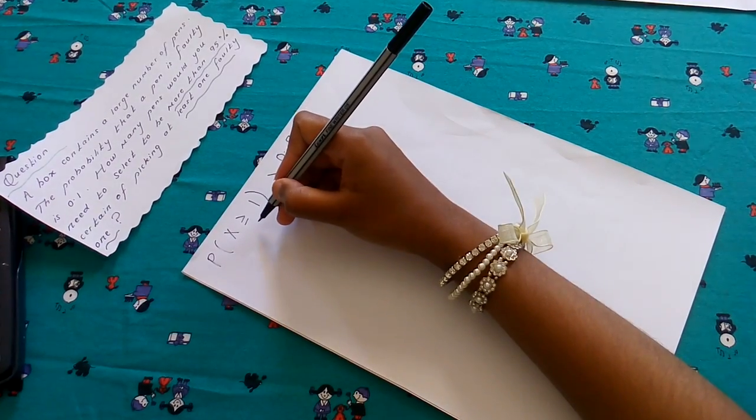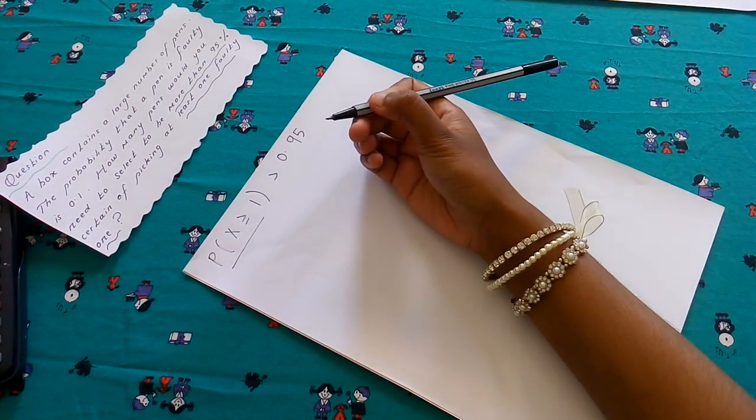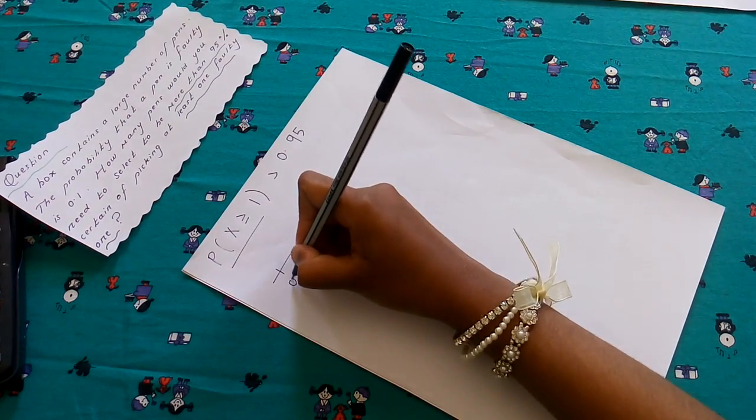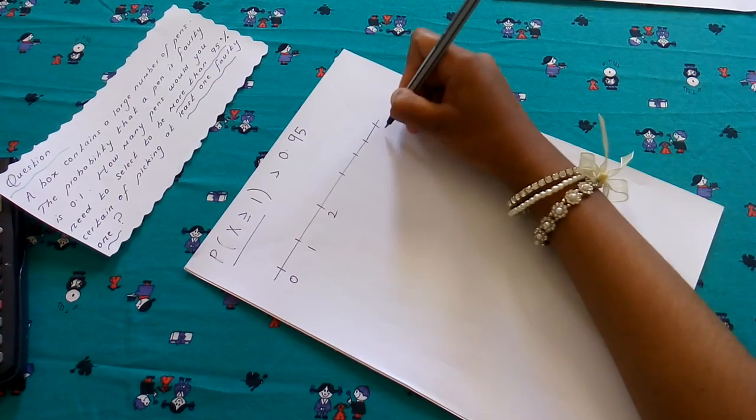Now how can we rewrite this probability of X is greater or equal to 1? What does this probability mean? If we do a number line, we're going to start with 0, 1, 2, so it goes on up till n.